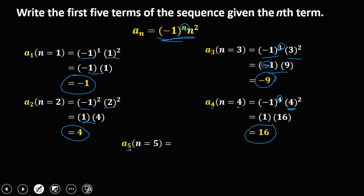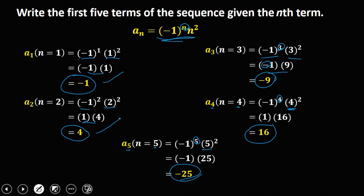And the fifth term is a sub 5. So n is now equal to 5. Negative 1 to the power 5 times 5 squared. Since 5 is an odd number, negative 1 to the power 5 is negative 1. And 5 squared is 25. So negative 1 times 25 is negative 25. So these are the first five terms of the sequence: negative 1, 4, negative 9, 16, and negative 25.